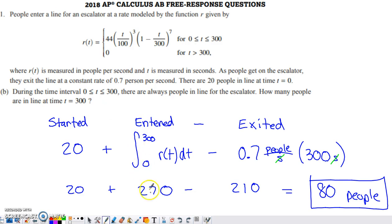We know that 270 people enter the line from time 0 to time 300. But if we want to know how many people are actually in the line, we have to take into account how many people we started with. So we started with 20 people in the line. We add on how many people entered the line from 0 to 300. But then we also have to subtract off how many people exited the line within that time frame.